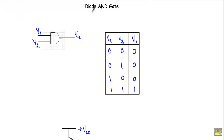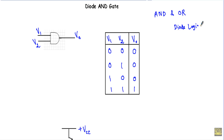In this video I will show you the operation of a diode AND gate. We can perform logical AND and OR operations using simple diode logic. Here I have an AND gate with two inputs V1 and V2, and I am taking the output from this terminal.